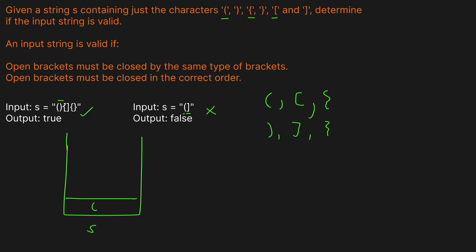So we check: this is a right parentheses — is the top of our stack a left parentheses? It is. So these two match and we can remove it. Now we see a left bracket and put it in the stack. Then we see a right closing bracket, and the left bracket is closed by the right one, so we remove it. Same with the left curly brace — we add it to the stack, and we now have a right one to close it. Our stack is now empty, which means we've closed all of them.